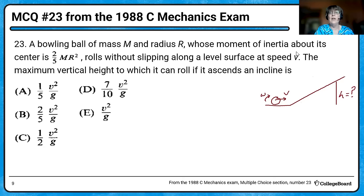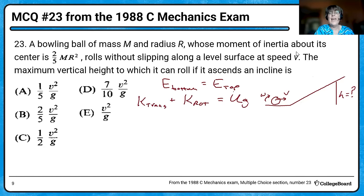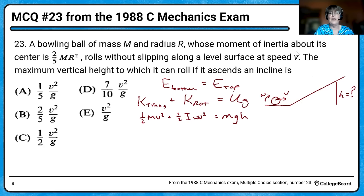This is a job for the conservation of energy. The energy at the bottom will equal the energy at the top at vertical height H. Down below, we had kinetic energy — but remember, there are two kinds: kinetic energy tied up in the translational motion and in the rotational motion. All that kinetic energy will get converted to gravitational potential energy, and that'll help us find H. So there's the translational, there's the rotational, and there's the gravitational potential energy, MGH. We need to make some substitutions.